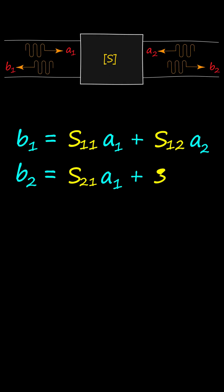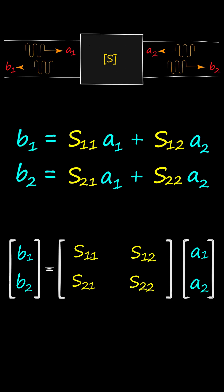S-parameters are a set of complex numbers that describe how electromagnetic waves are scattered or transmitted by a microwave circuit or component. Suppose we have a low noise amplifier driven by an RF source and terminated by a load impedance.